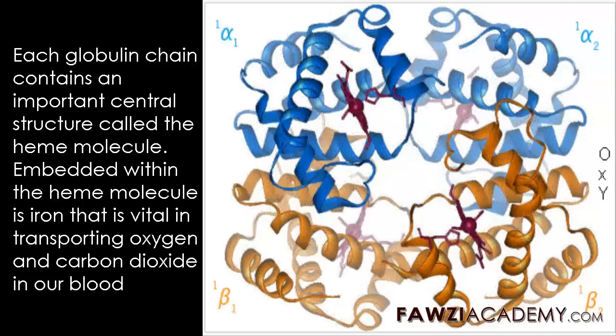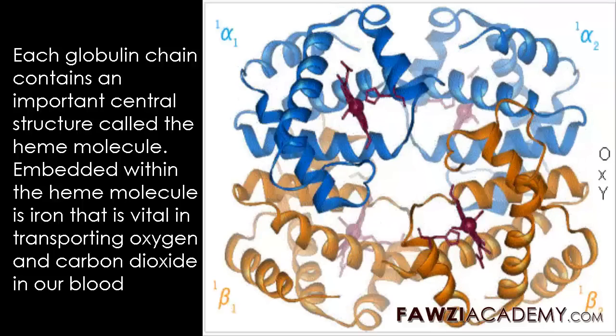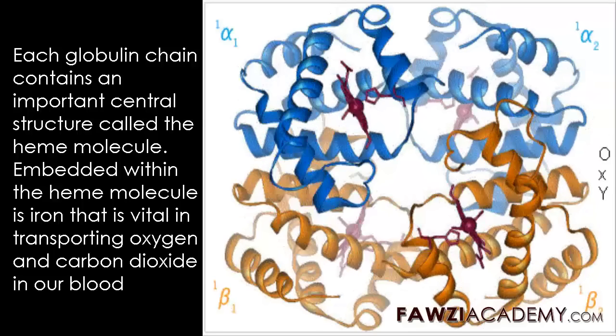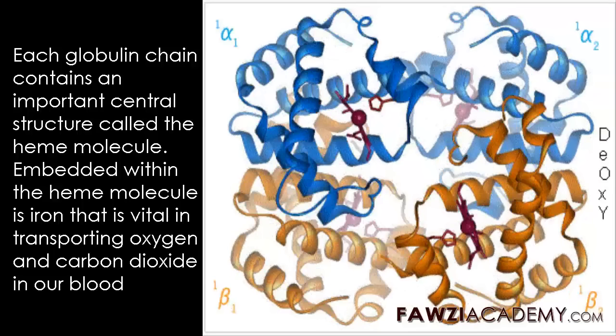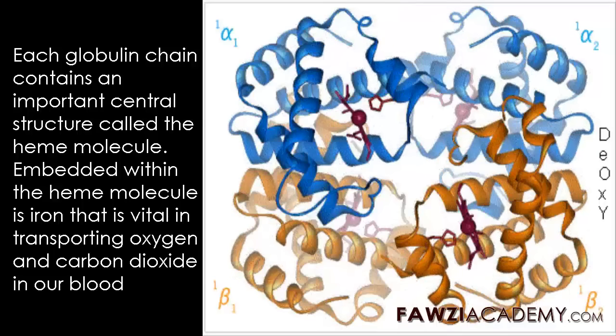Each globulin chain contains an important central structure called the heme molecule. Embedded within the heme molecule is iron, that is vital in transporting oxygen and carbon dioxide in our blood.